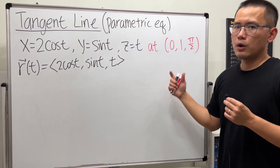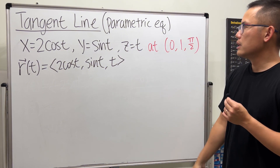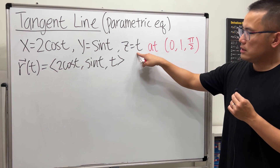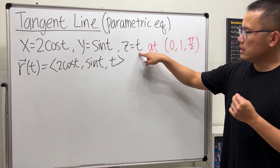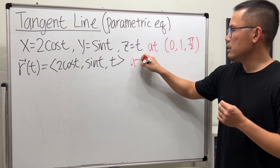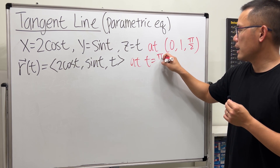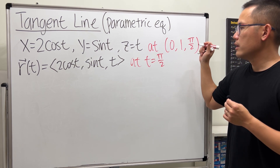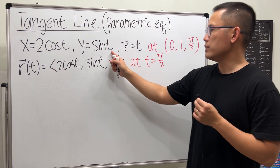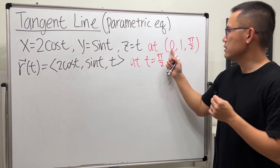We have to figure out what T value we are talking about. Look at the Z component — Z is T, which is just π over 2. So the T value is clearly π over 2. You can also plug π over 2 into the X and Y components to get 0 and 1.